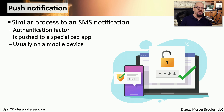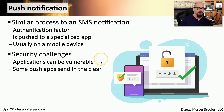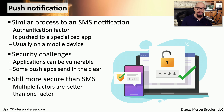Instead of relying on a text message, we may rely on our mobile device having a particular application installed. This is a push notification where the server is pushing down the authentication information to your mobile device, and it uses this mobile device app to receive the pushed message and display the authentication information. There are also some security concerns associated with push notifications — the application receiving the push notification might have vulnerabilities, or the app may not be using encryption, sending the push notification in the clear rather than using a protected mechanism. With the right app, however, this is a relatively safe process and probably more secure than SMS.